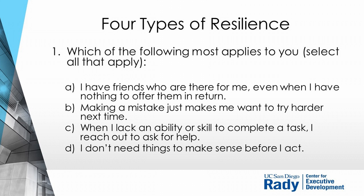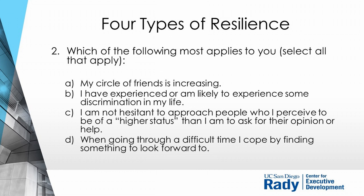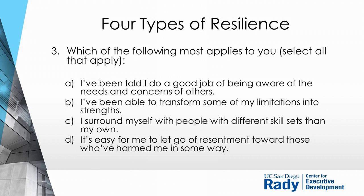Question two — select all that apply: A — my circle of friends is increasing; B — I have experienced or am likely to experience some kind of discrimination in my life; C — I am not hesitant to approach people of higher status to ask for their opinion or help; D — when going through a difficult time I cope by finding something to look forward to. Question three: A — I've been told I do a good job being aware of the needs and concerns of others; B — I've been able to transform some of my limitations into strengths; C — I surround myself with people who have different skill sets than my own; D — it's easy for me to let go of resentment toward those who've harmed me.